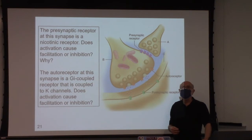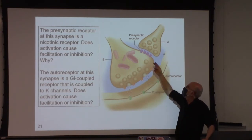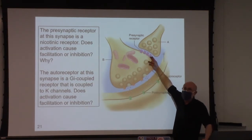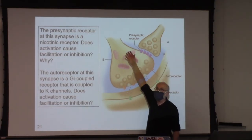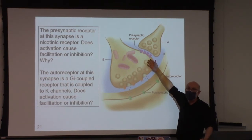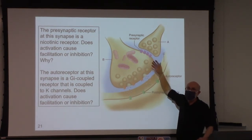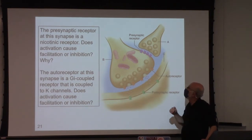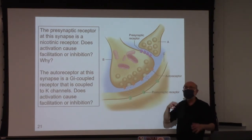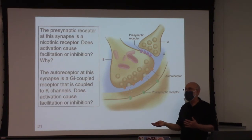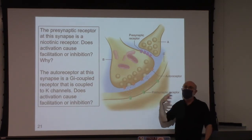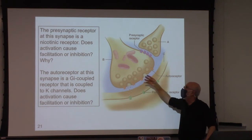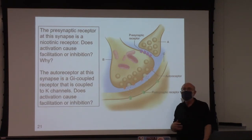It would be inhibition, because chloride influx would hyperpolarize. So now the depolarization of the action potential and the hyperpolarization caused by GABA-A receptors — that summation, a positive with a negative, makes a smaller positive. Less depolarization, less calcium channel activation, less calcium influx, less synaptotagmin binding, less fusion, less neurotransmitter release.